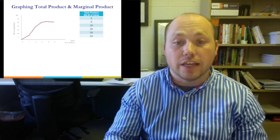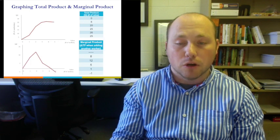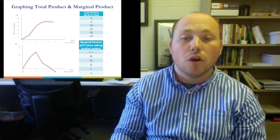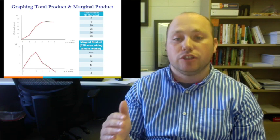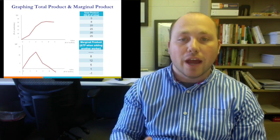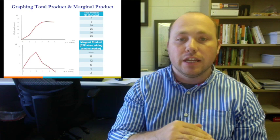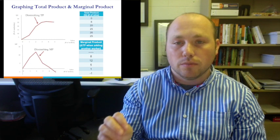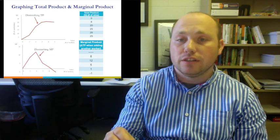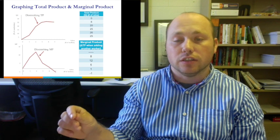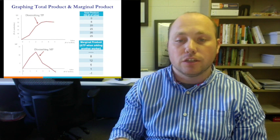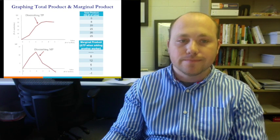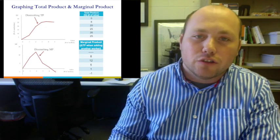Looking at marginal product, it is increasing in the beginning — increasing marginal product — then it begins to decrease, and the slope becomes negative, meaning the rate of change starts to fall. In the total product graph, there's a steep increase early on and a less steep increase later — that's where diminishing total product begins. Decreasing total product occurs in the right corner. For the marginal product graph, diminishing marginal product occurs when the slope of the curve becomes negative.